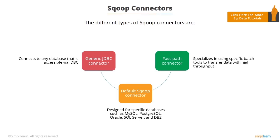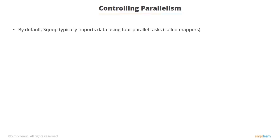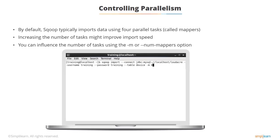Sqoop divides the task into four default mappers. Parallelism helps Sqoop in dividing tasks beyond default mappers. By default, Sqoop typically imports data using four parallel tasks called mappers. Increasing the number of tasks might improve import speed, but note that each task adds load to your database server. You can influence the number of tasks using the dash-m or num-mappers option, though Sqoop views this only as a hint and might not honor it. In the following screenshot, we set parallelism to eight.